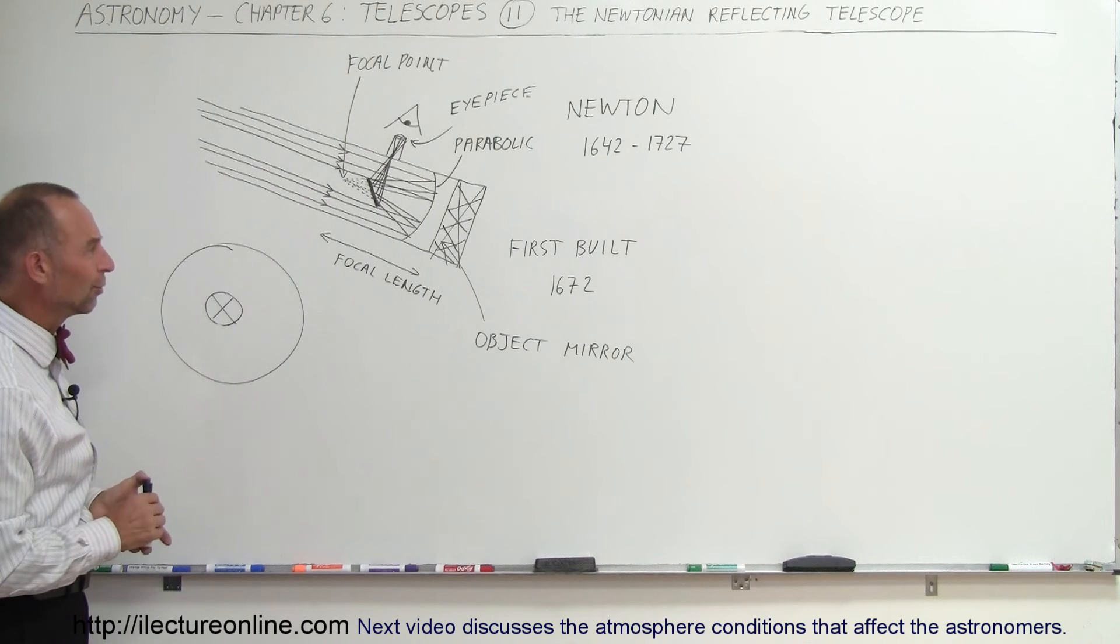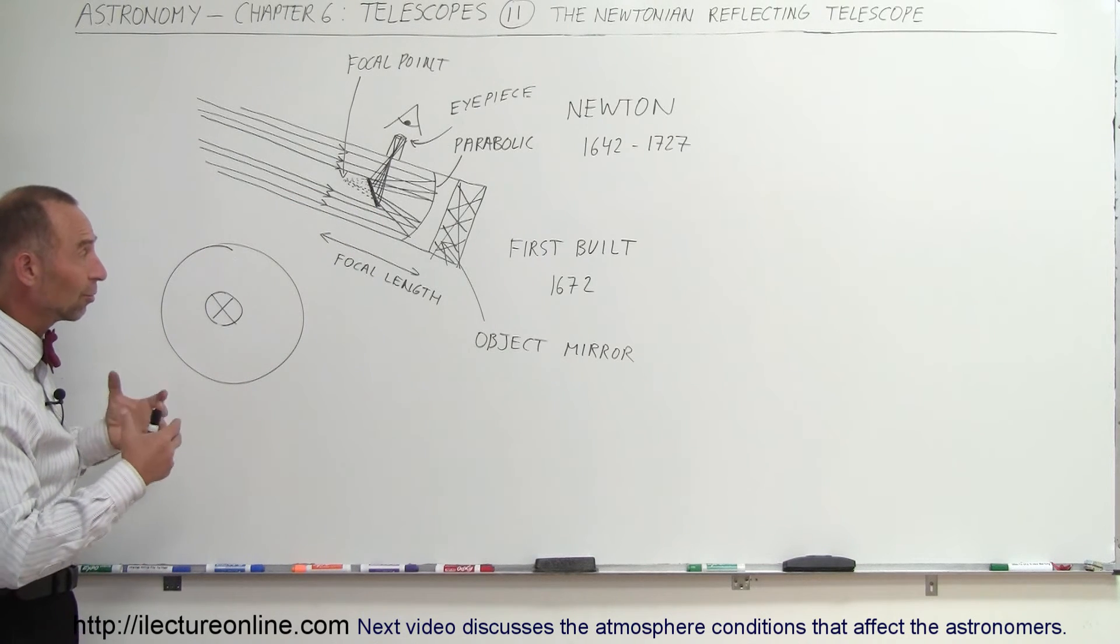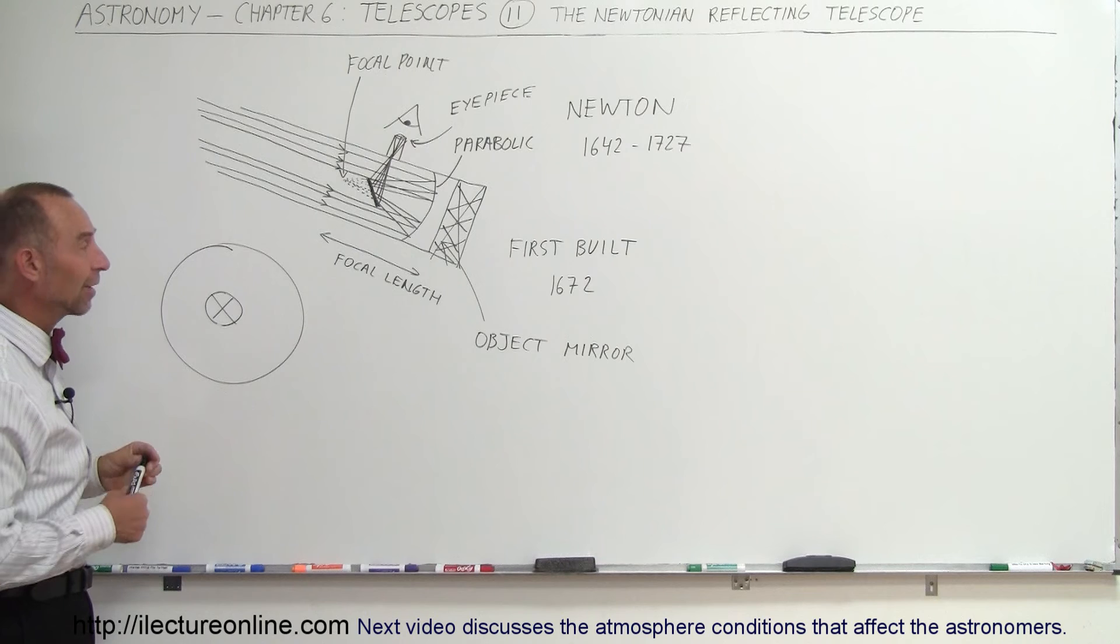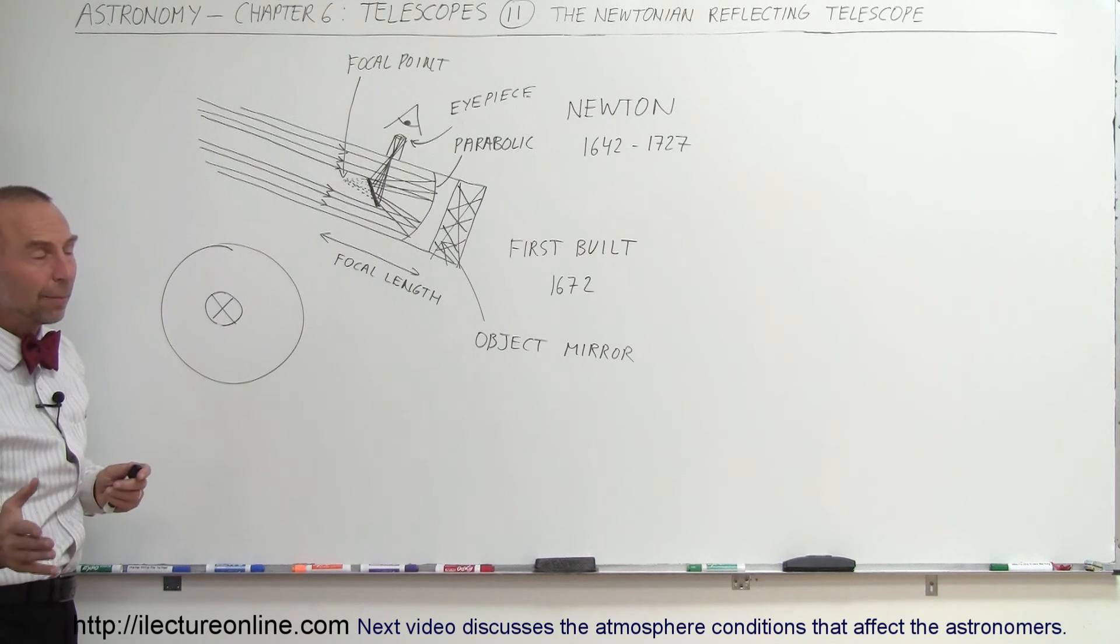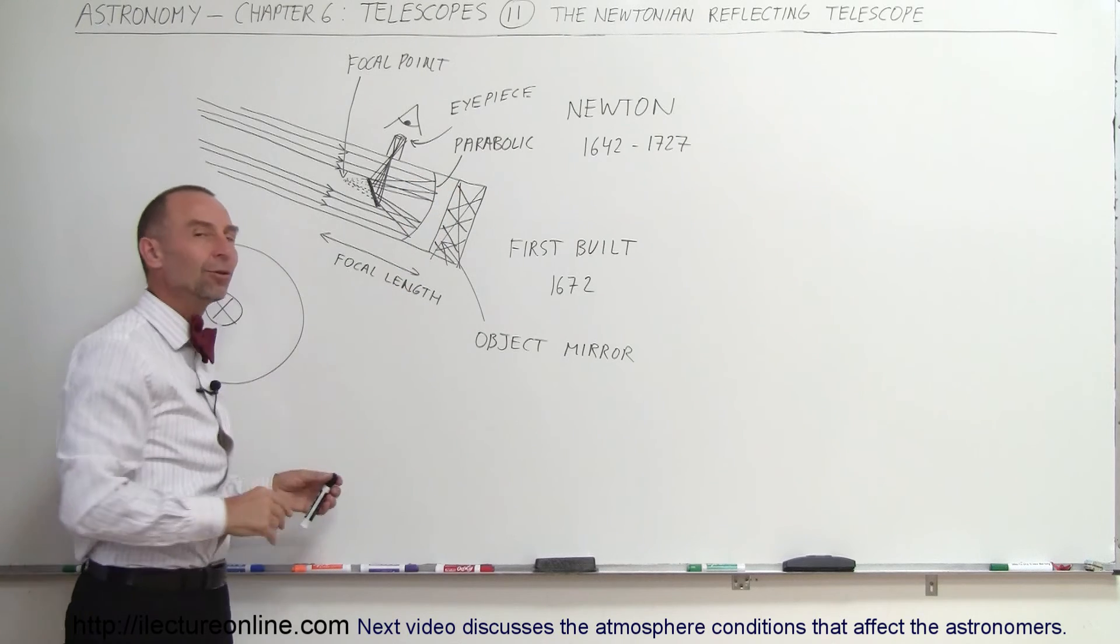So, when Newton came up with this, it was very ingenious. This is the major design that we then developed for many hundreds of years, because it's much more practical than building the refracting telescopes. But then, eventually, the size of these began to overwhelm the ability to build them.